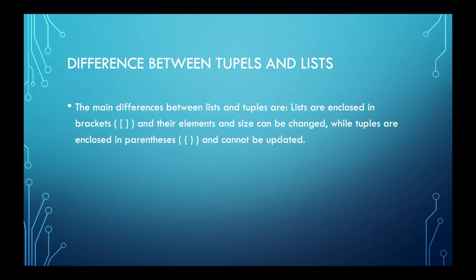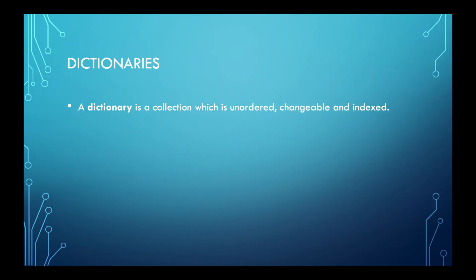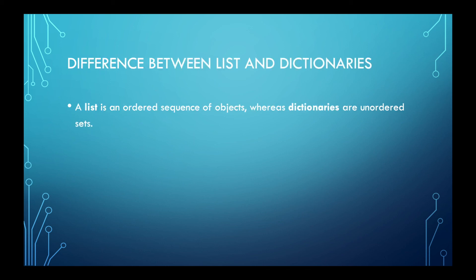So the difference between tuples and lists. The main difference is that lists are enclosed in square brackets and their elements and size can be changed, while tuples are enclosed in parentheses and they have circled type of or curved type of brackets and they cannot be updated or cannot be changed. Okay, so let's talk a little bit more about dictionaries. A dictionary is a collection which is unordered, changeable and indexed. So the difference between lists and dictionaries is that a list is an ordered sequence of objects where dictionaries are unordered and they're all over the place.